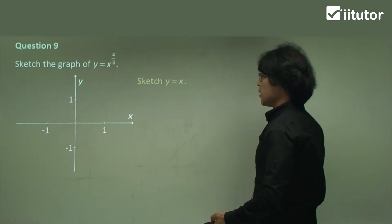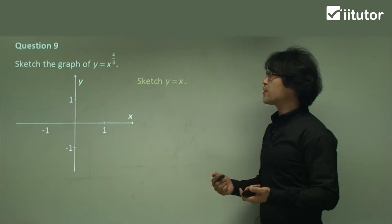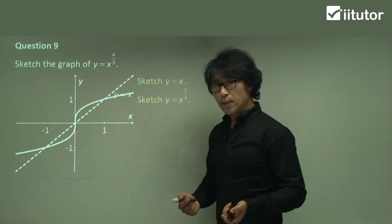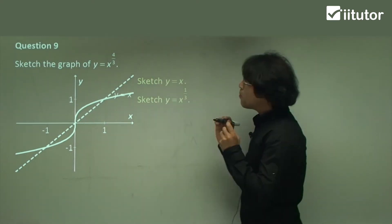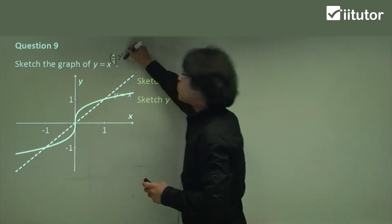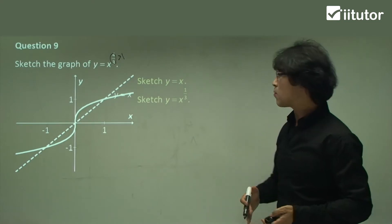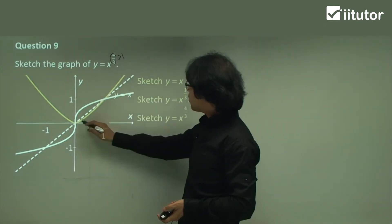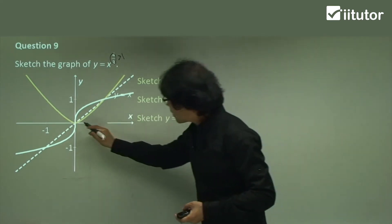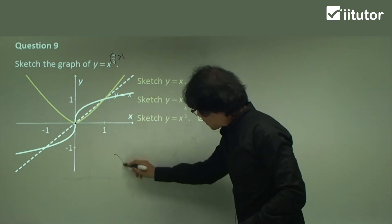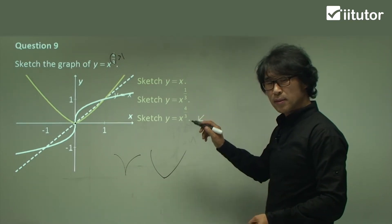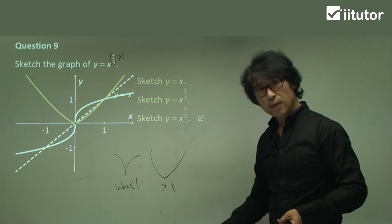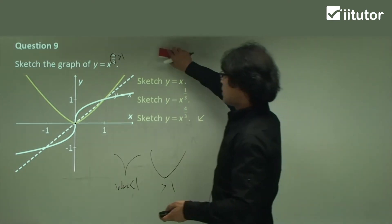Question 9: you should be able to make your own steps. Sketch y equals x, then sketch x to the power of 1 over 3, and then raise to the power of 4. Make sure the power of 4 over 3 is greater than 1 — this is one example greater than 1, not smaller. So it will go down — below the y equals x graph. But make sure it still has a spike. The index being less than 1 gives this type of spike; the index greater than 1 gives that type of spike. There are many details in sketching these graphs.